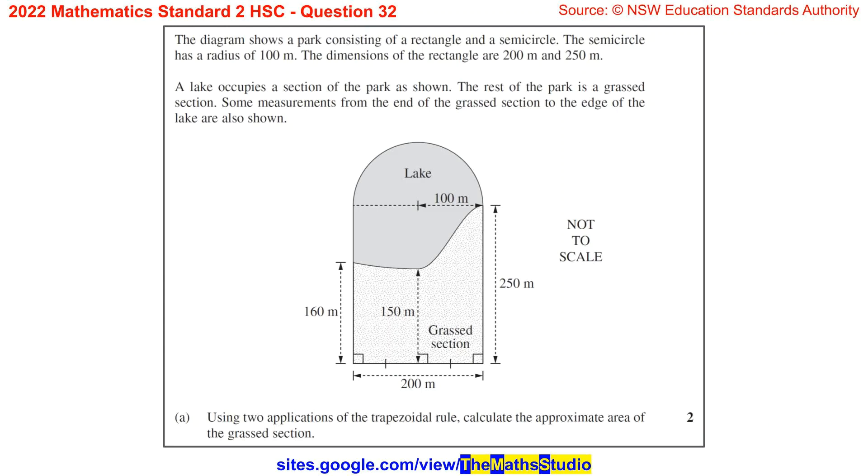Part A. Using two applications of the trapezoidal rule, calculate the approximate area of the grassed section.